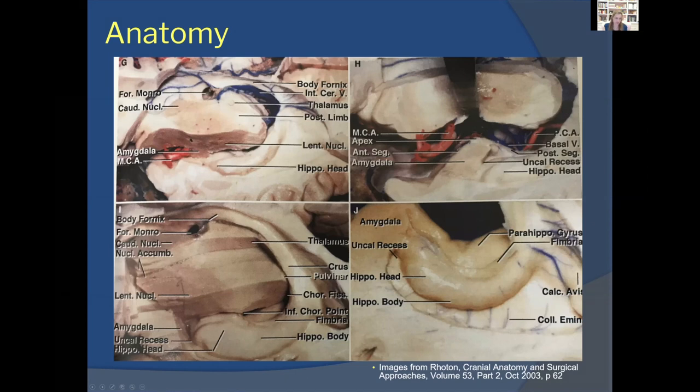So you have your hippocampus, dentate, and fimbria coming around to the fornix — that is the main picture people imagine when they think of the limbic system.